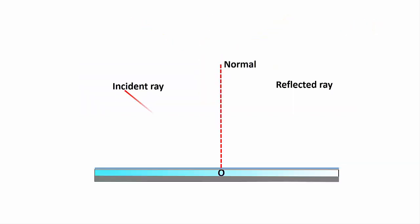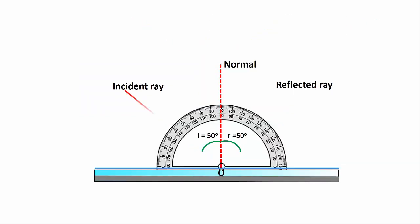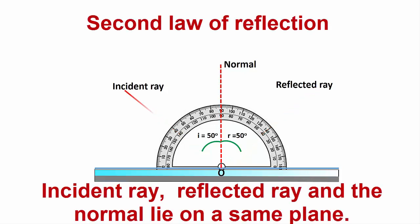Now observe incident ray, reflected ray, and normal. All these three lines lie on the same plane.